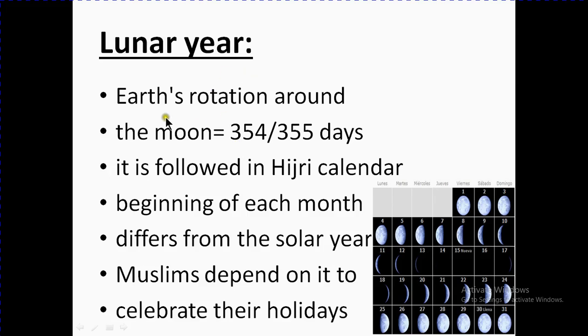Lunar year: Earth's rotation around the moon takes almost 354 to 355 days, maybe sometimes one day less or sometimes one day more.